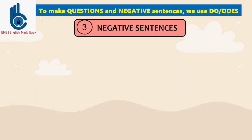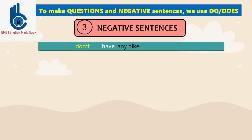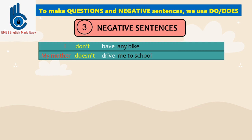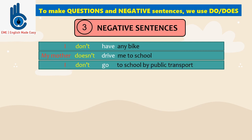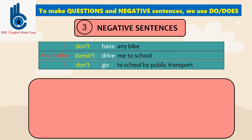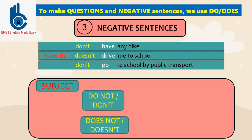Now we will see how to make negative sentences. From the dialogue, we can see some examples of negative sentences: I don't have any bike. My mother doesn't drive me to school. I don't go to school by public transport. From the three examples, we can see the same pattern — start with subject, followed by do not or don't, or does not or doesn't.